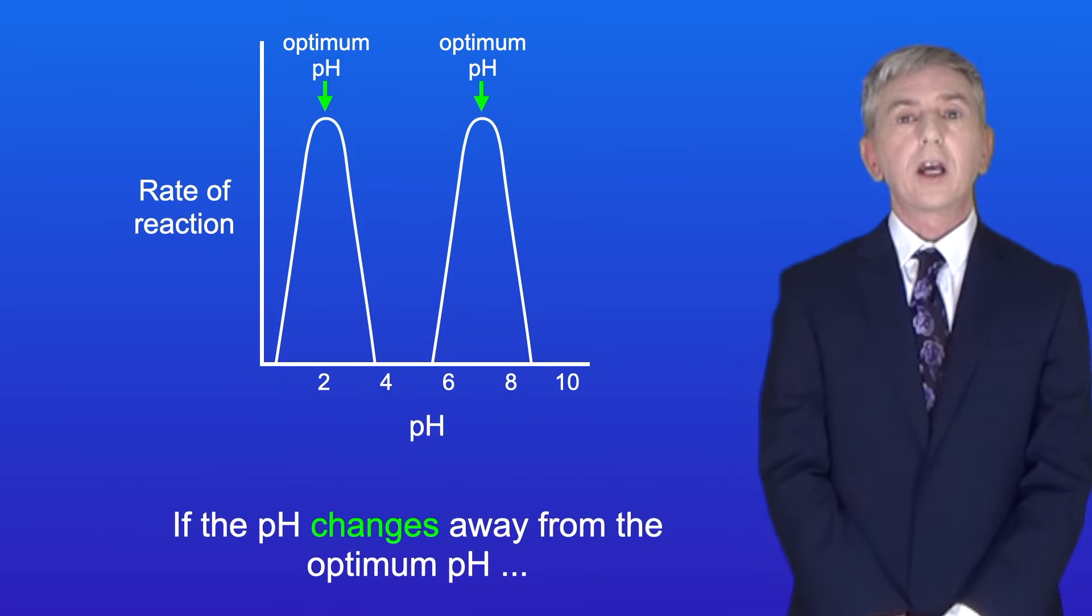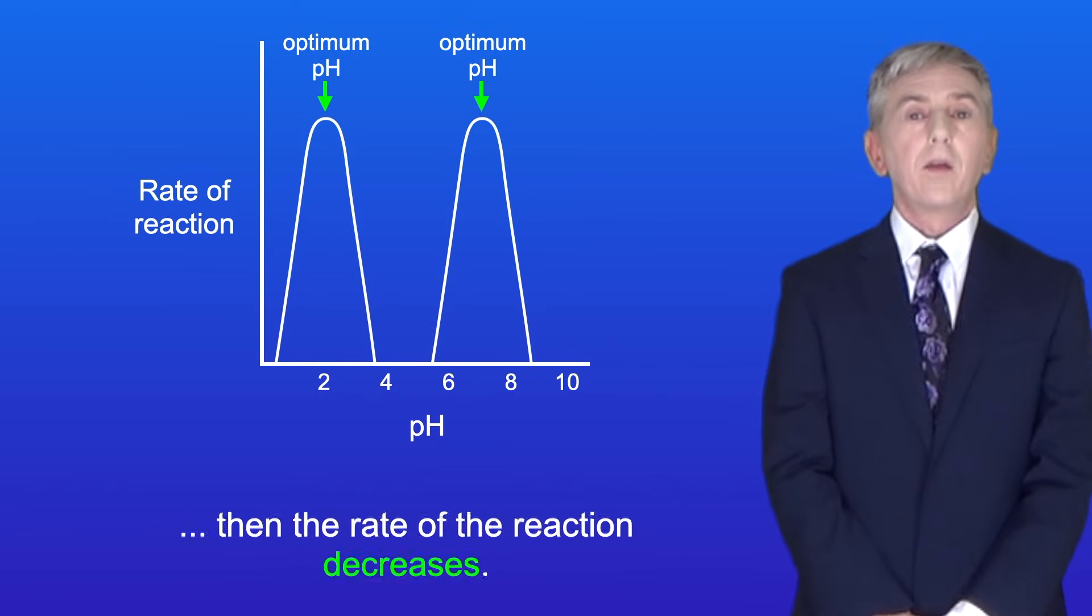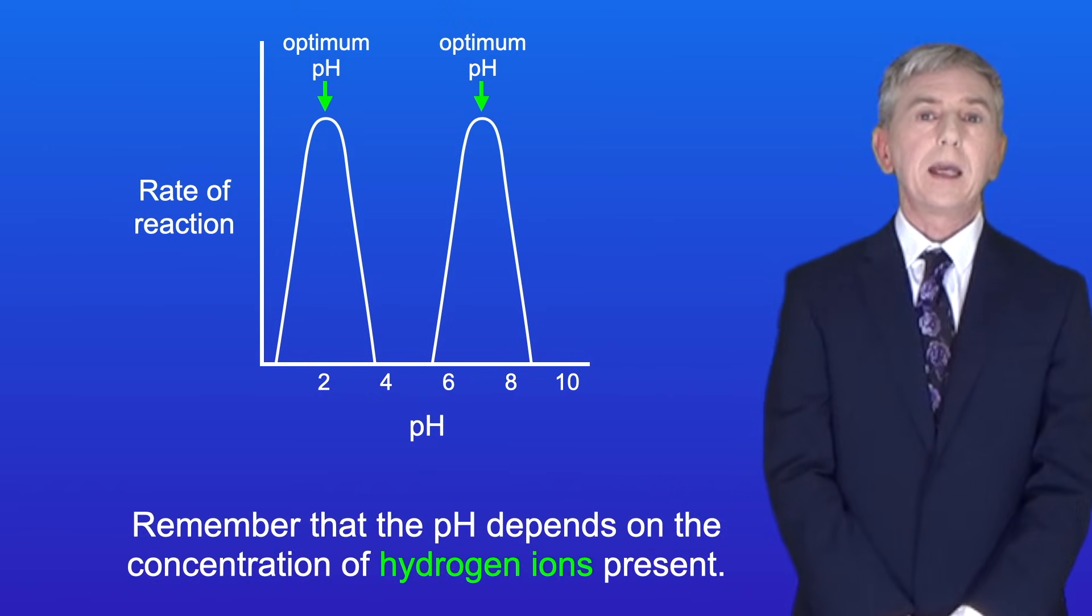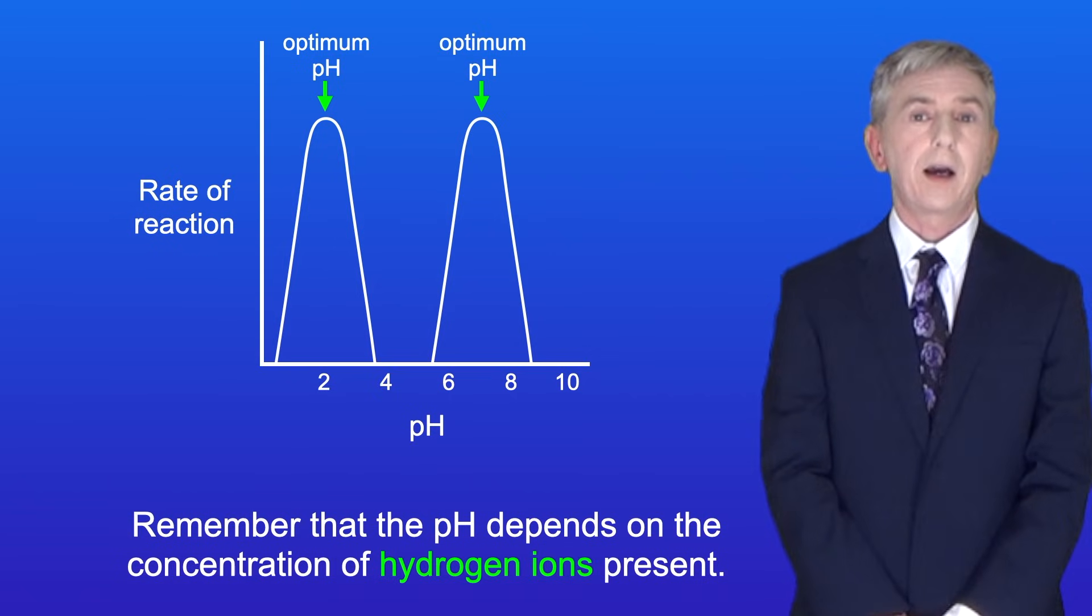Now if the pH changes away from the optimum pH, then the rate of the reaction decreases. Remember that the pH depends on the concentration of hydrogen ions present.